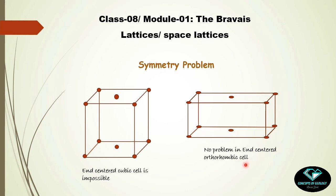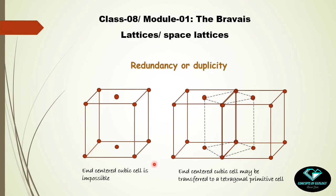This problem does not exist for the orthorhombic unit cell, because in orthorhombic, all faces are not equivalent — certain pairs of faces are equivalent to each other separately. This can also be explained from the view of redundancy: what we might try to create as an end-centered cubic cell is actually a tetragonal primitive cell. If we place two end-centered cubic cells side by side and join the lattice points, we get a primitive tetragonal unit cell. This is why not all systems permit all types of arrangements.